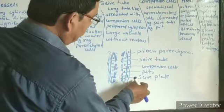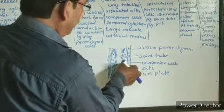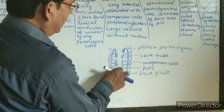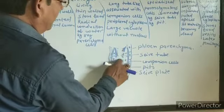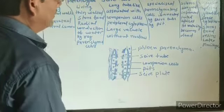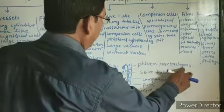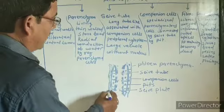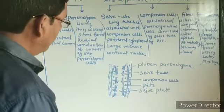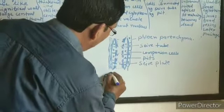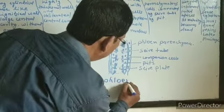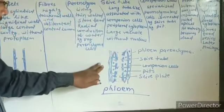Here we see the sieve tube and companion cells associated with the sieve tube. Companion cells are connected with sieve tubes by several plasmodesmata. Sieve tubes have several sieve plates with numerous pores, so they are called sieve plates. The next layer is phloem parenchyma. It also contains phloem fibers. So all phloem elements — fibers, parenchyma, sieve tube, and companion cells — are visible in the figure.